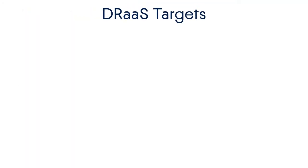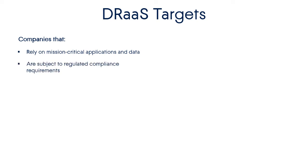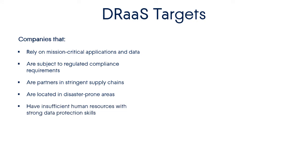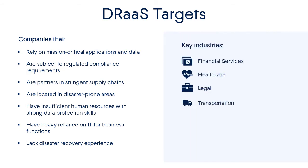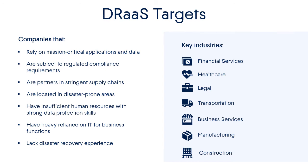Disaster recovery technologies are targeted at the following types of companies: one, companies who rely on mission-critical applications and data; two, companies that are subject to strict compliance requirements; three, companies acting as partners in rigorous supply chain management; four, companies located in disaster-prone areas; five, companies that do not have sufficient human resources with strong data protection skills to ensure a high level of business continuity; six, companies heavily relying on IT for business functions; and seven, companies that do not have sufficient disaster recovery experience. This covers a wide range of industries, from financial services and healthcare up to construction, transportation, and many others.